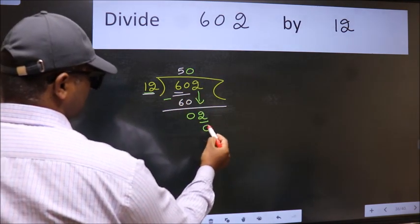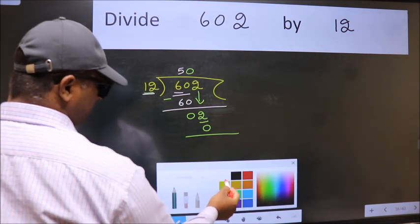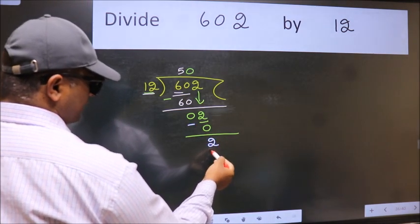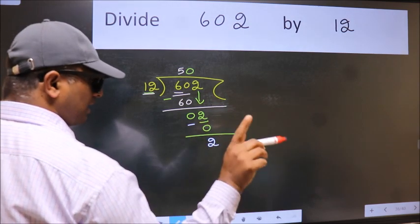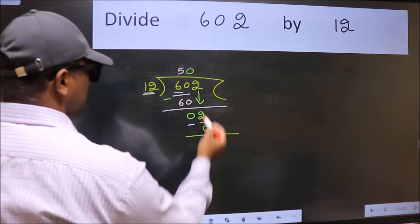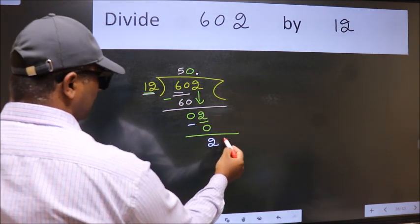So 12 into 0. Now we subtract. We get 2. Over here we did not bring any number down. And 2 smaller than 12. So now we can put dot and take 0.